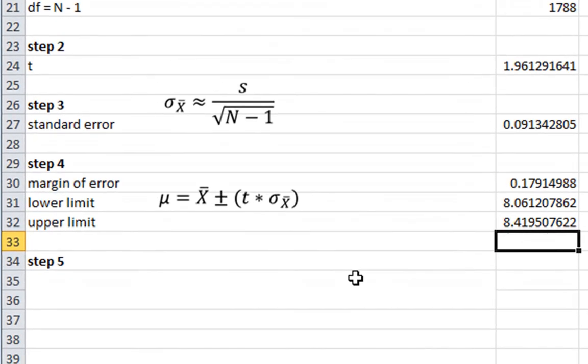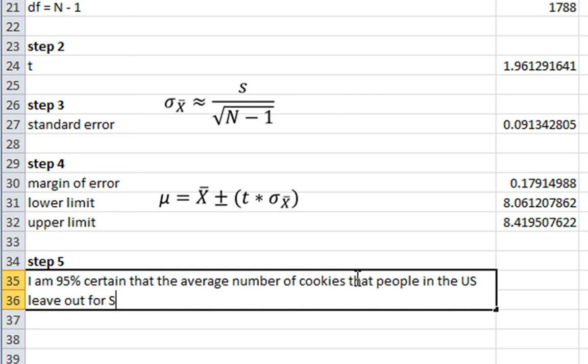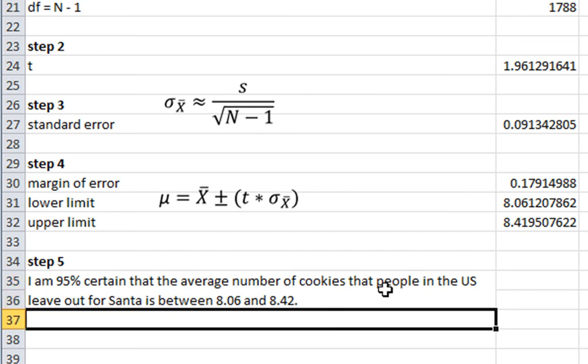Now we're ready to make our conclusion. I can say that I am 95% certain that the average number of cookies that people in the U.S. leave out for Santa is between 8.06 and 8.42. Make sure we're rounding when we report these numbers. Otherwise, you're going to systematically bias your numbers one way or the other. So make sure you're rounding to the hundredths place. That's how to calculate a confidence interval given sample data.